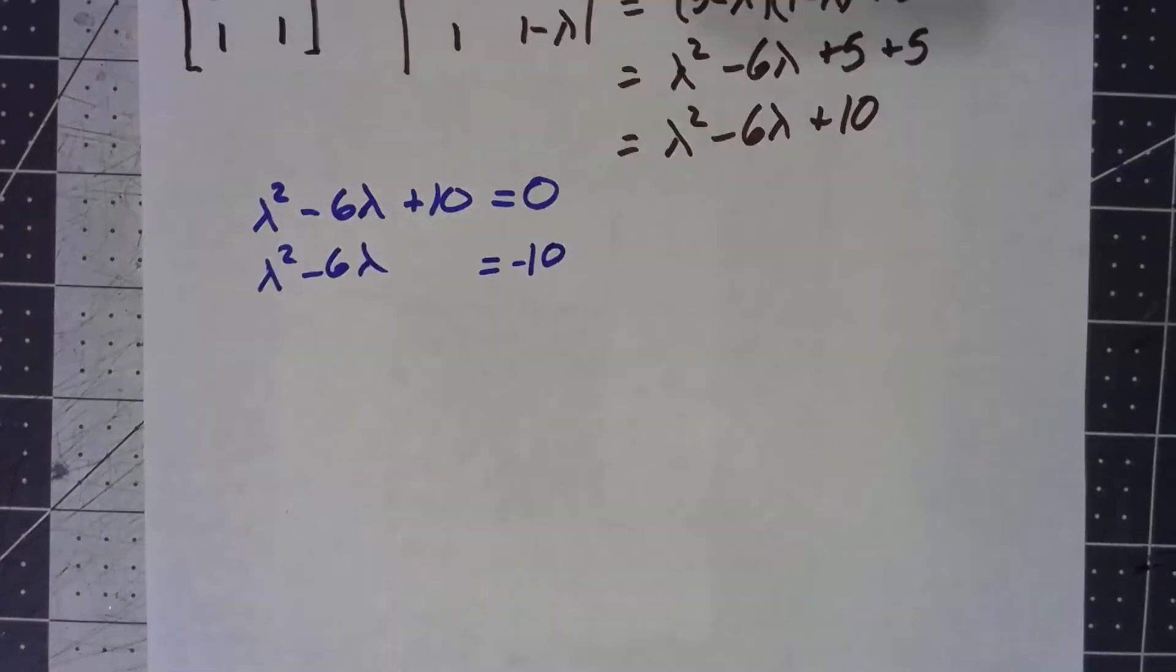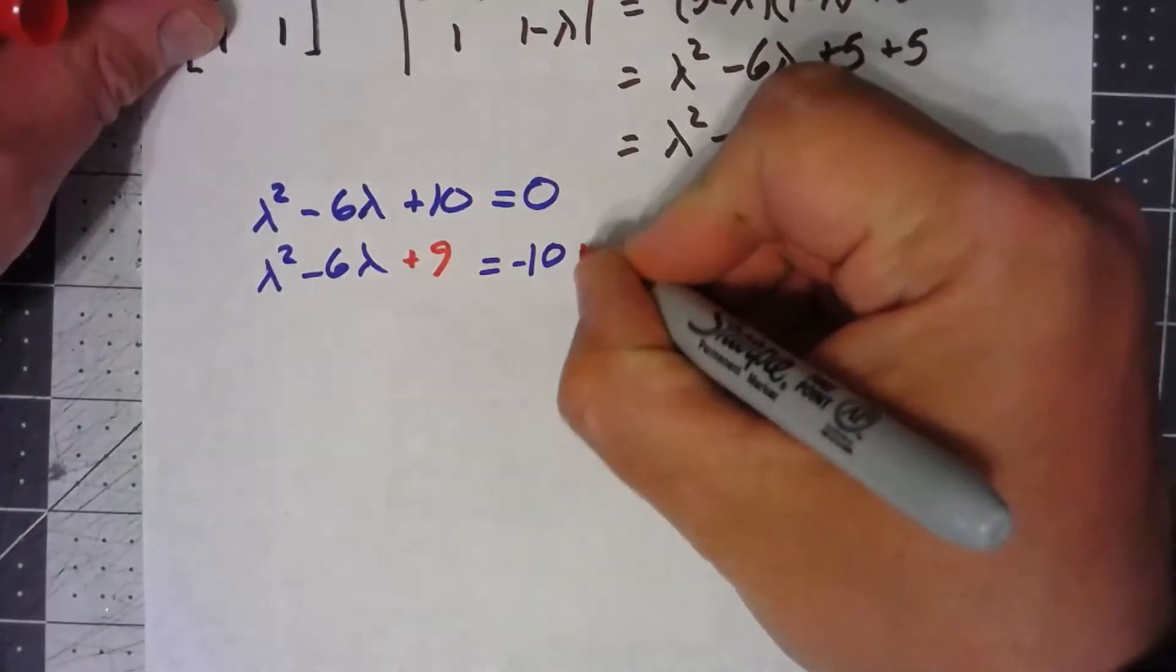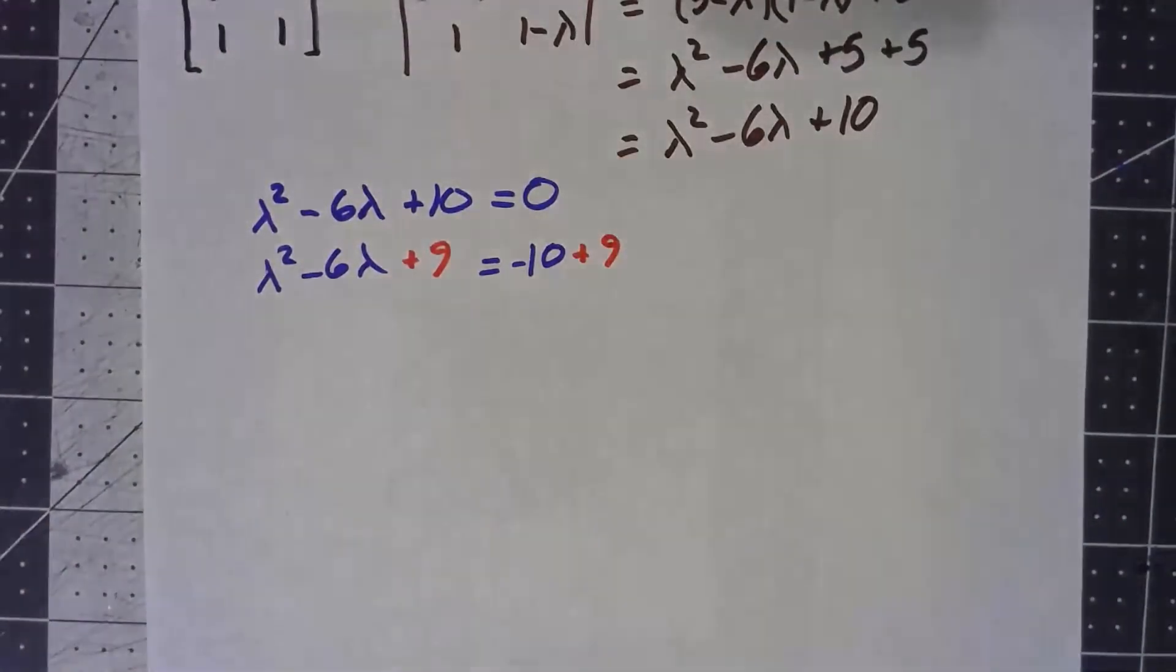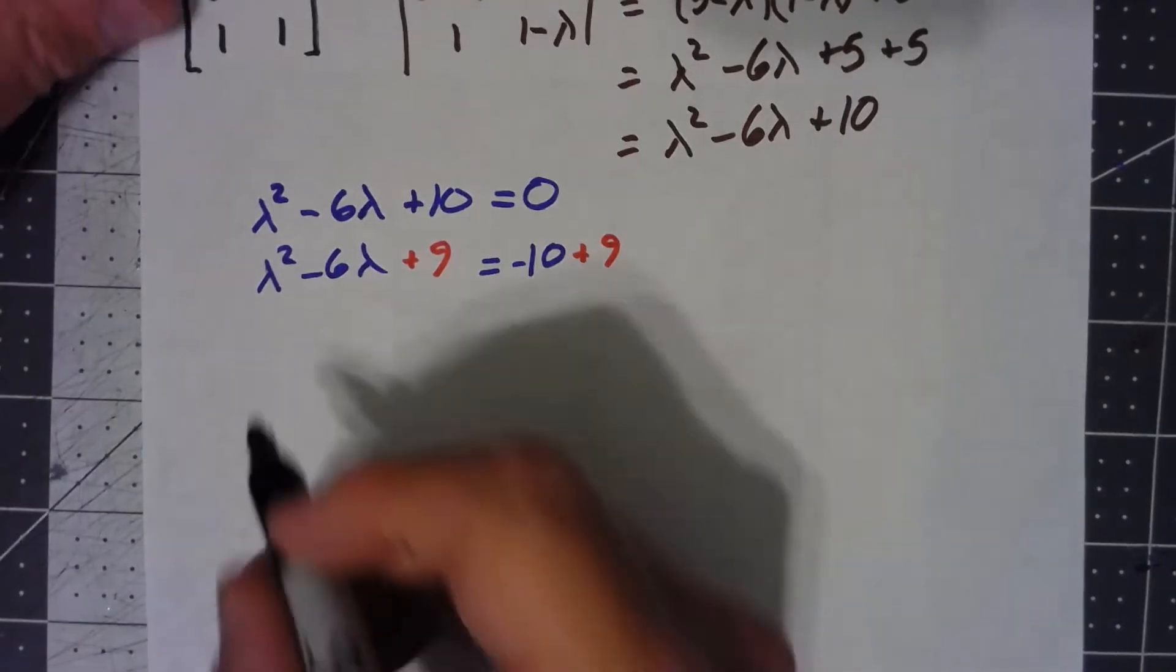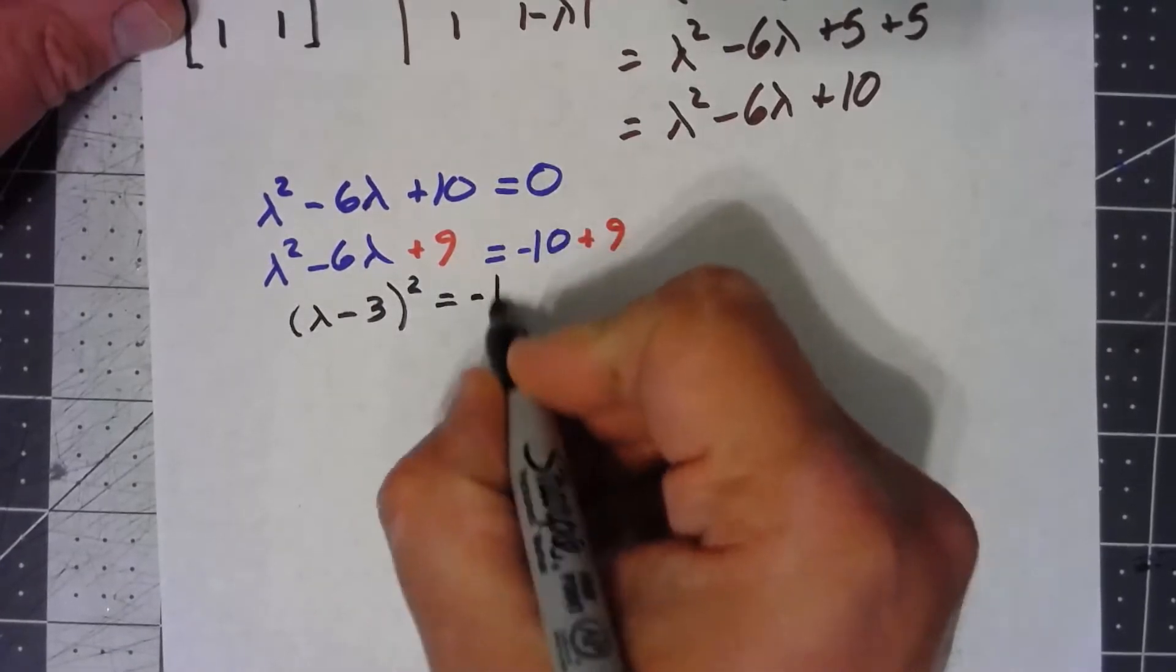If I take half the number in front of lambda, it's negative 3. Square it gives me 9. So I'll add 9 to both sides.